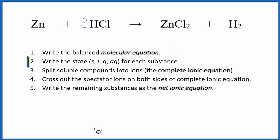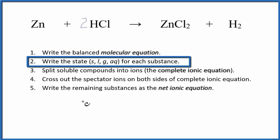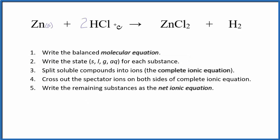After we've done that, we need to write the state of each substance if it's not given. Zinc's a metal, so that's going to be a solid. Hydrochloric acid is usually aqueous, and that means the zinc chloride here would be aqueous. H2, that's hydrogen gas.